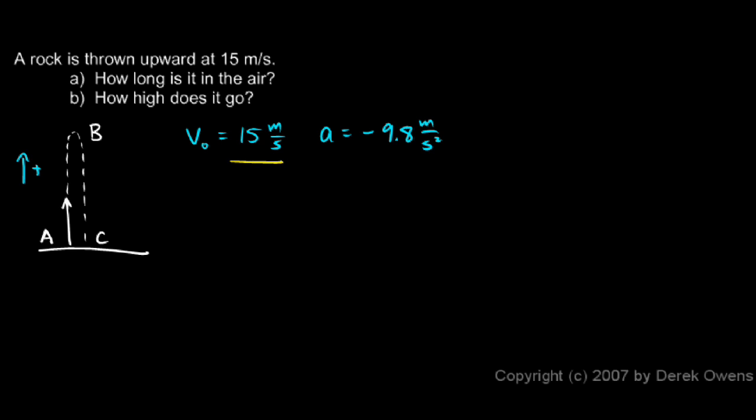So writing these down, writing my initial velocity as a positive number and the acceleration as a negative number in this case is consistent with up being positive.